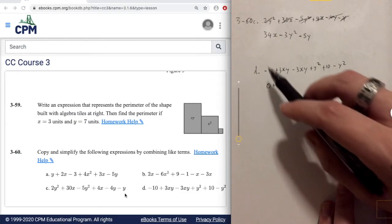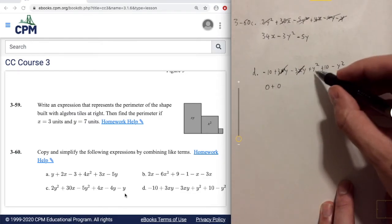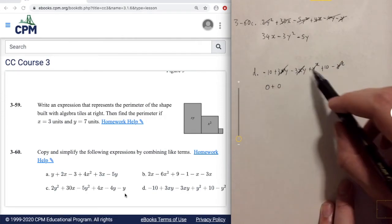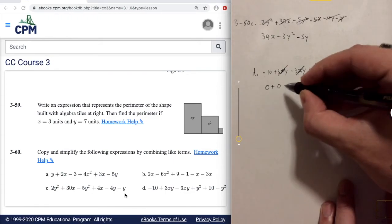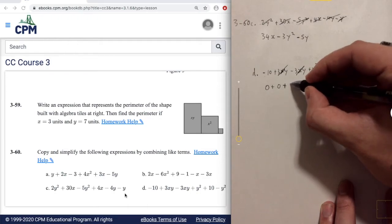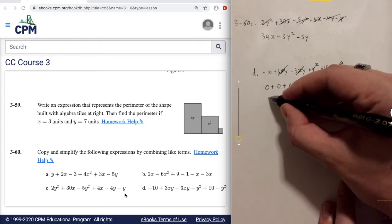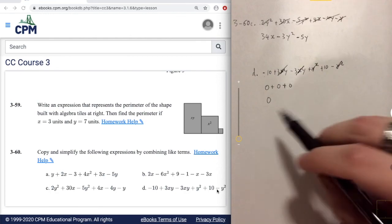Now finally all that's left is, oh, and we should probably be crossing them out. Makes it easier to tell when you're done. So now all we have left is a negative 10 and a positive 10. So negative 10 plus 10 is going to be zero. So we're actually just going to have a whole lot of nothing, end up with zero. So you can see why it's pretty good to simplify these expressions, because it looked like we had quite a bit going on here. But really, it was just equal to zero.